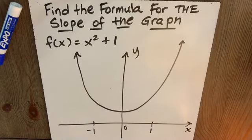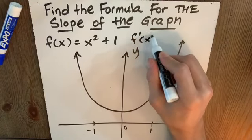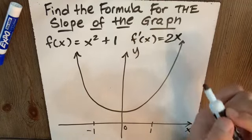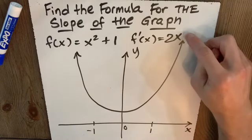If f of x is x squared plus 1, we just found f dash of x, that's how you read the derivative, is 2x. Well, what does that mean? Now, I was talking about the power of this earlier.